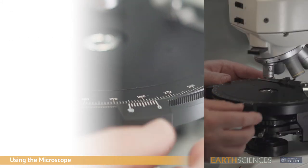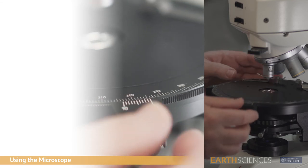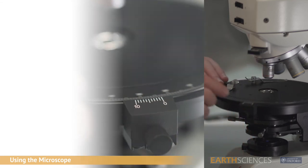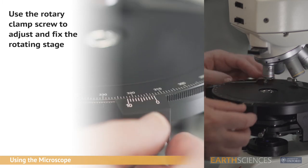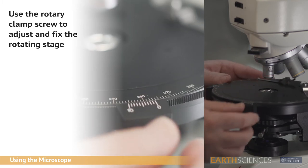The circular rotating stage is marked in one degree increments and has two verniers allowing one tenth degree measurements. To the right-hand vernier block is a rotary clamp screw to fix the stage in position.